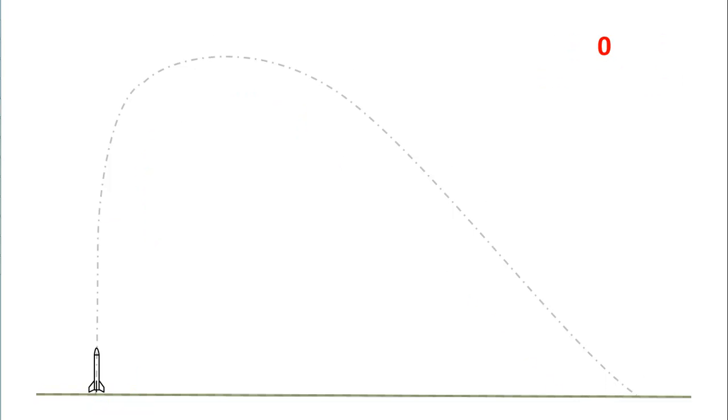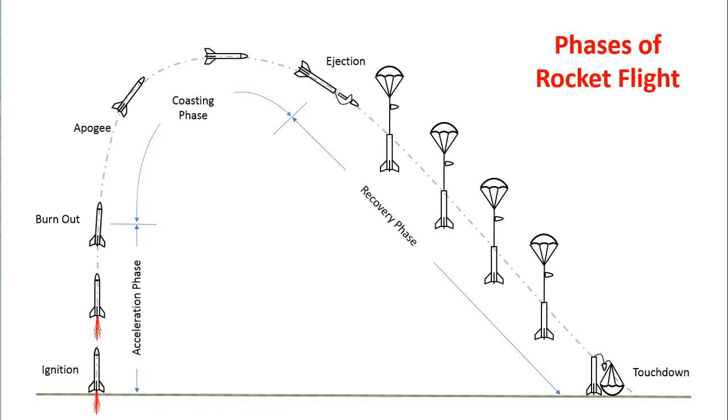For example, we have a rocket sitting on the ground. We go through a countdown. The rocket ignites. It flies up in the air. It goes to some highest point, then it ejects. A parachute comes out. The rocket slowly floats back down until it touches down to the ground. You put all of those together and you're right back to that diagram we started with. That diagram contains everything that happens during the flight of the rocket.